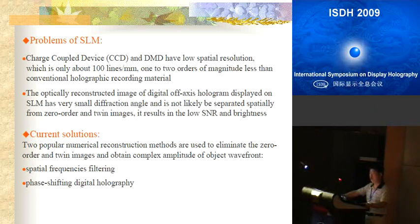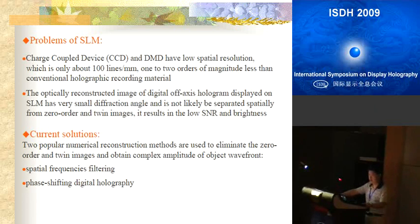The image cannot be well separated from zero-order and twin images, resulting in lower signal-to-noise ratio and brightness. Two popular numerical reconstruction methods are used to eliminate the zero-order and twin images and obtain the complex amplitude of the object wavefront. The first method is spatial frequency filtering, which uses a computer to calculate the Fourier transform of the digital hologram.